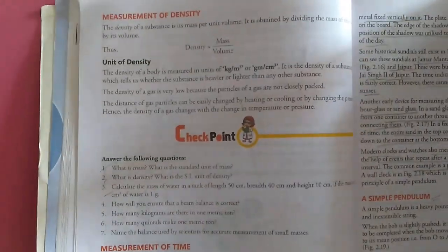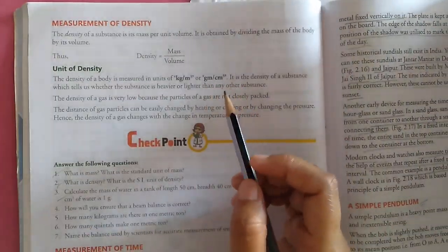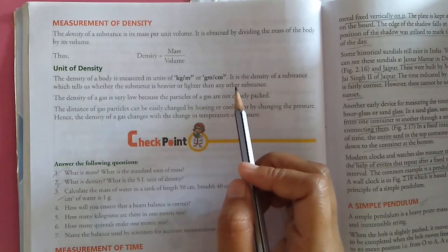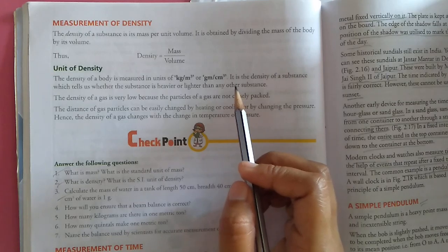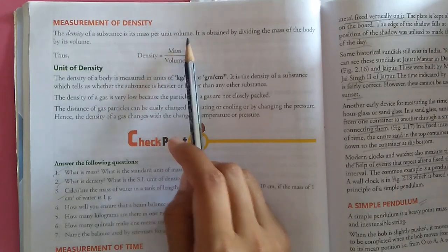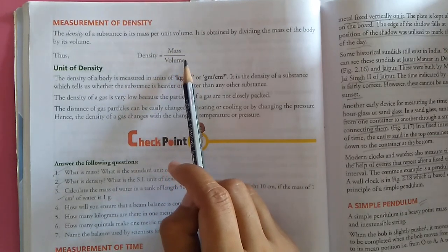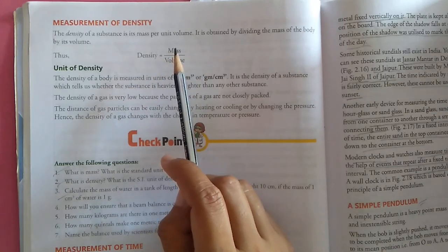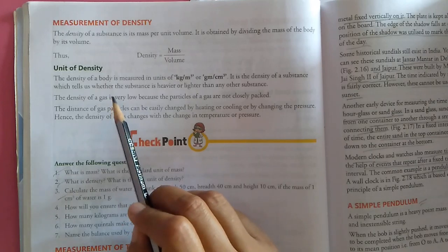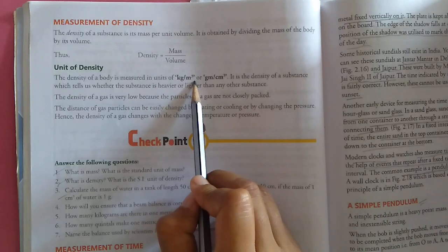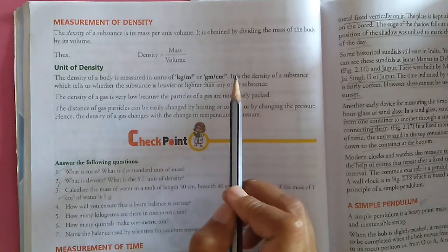Next measurement of density. What is density? The density of a substance is its mass per unit volume. How much mass is present in one meter cube of an object is called its density. Unit of density: the density of a body is measured in kg per meter cube or gram per centimeter cube.